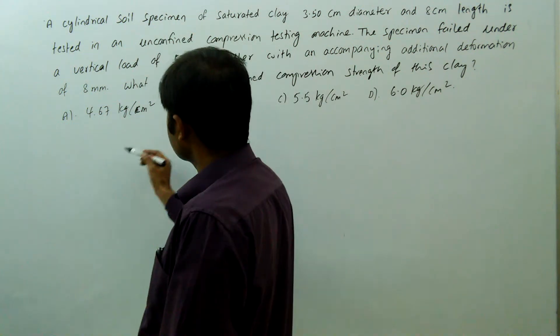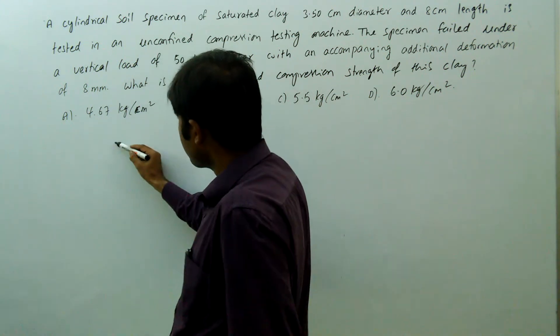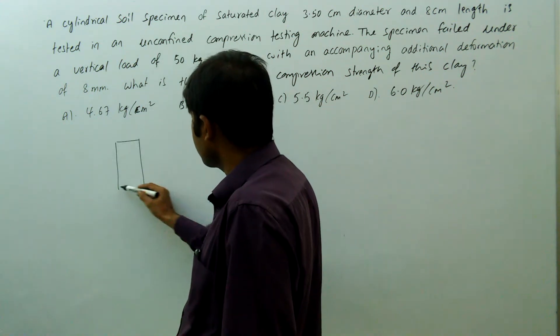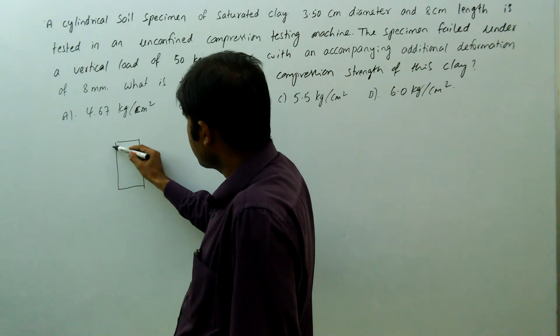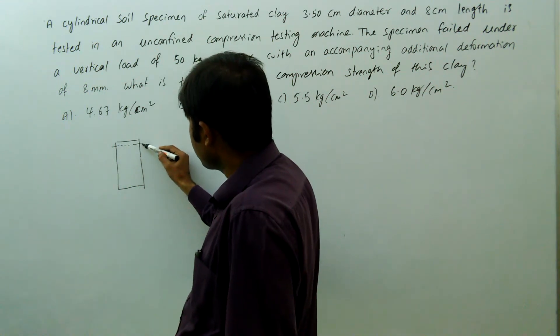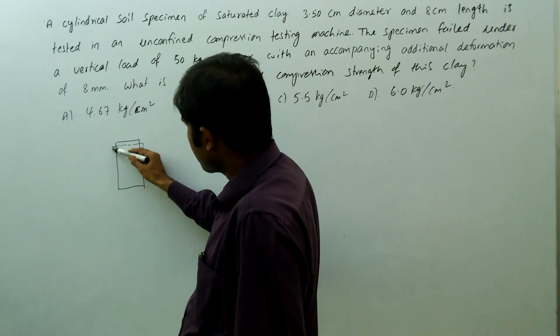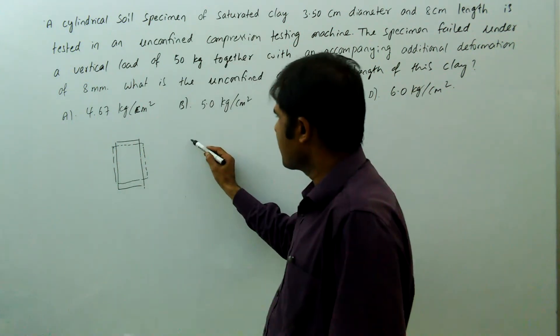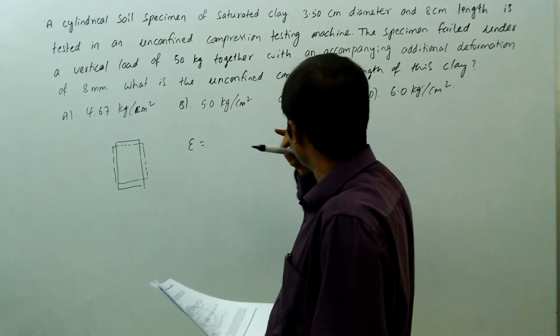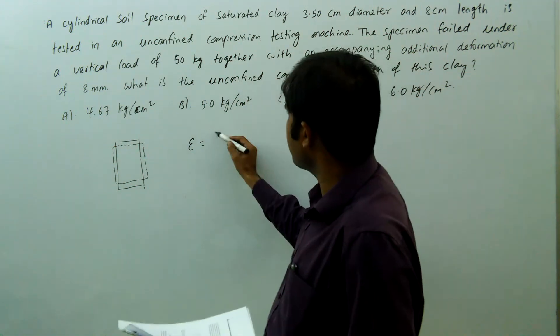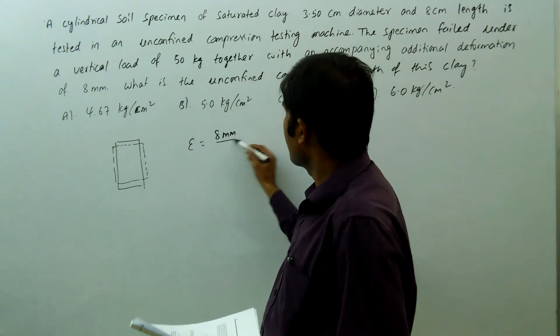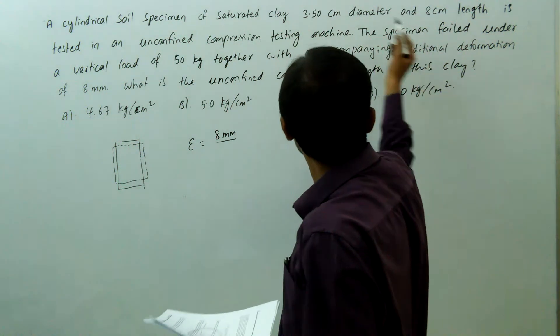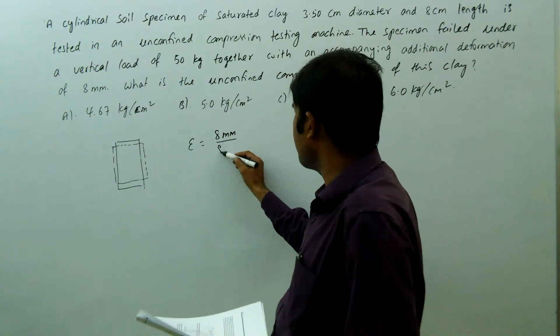Due to the deformation of this soil specimen in vertical direction, the cross-section area will increase. We know strain equals change in length by original length. Change in length is 8 mm, original length is 80 mm, so strain equals 0.1.